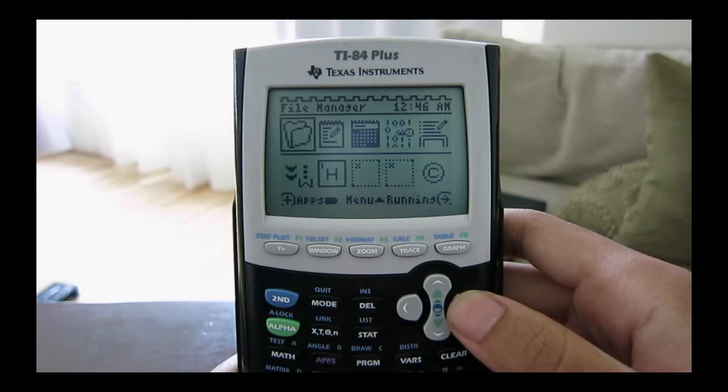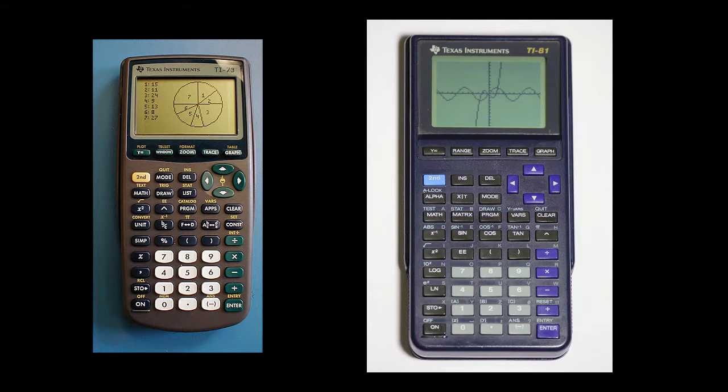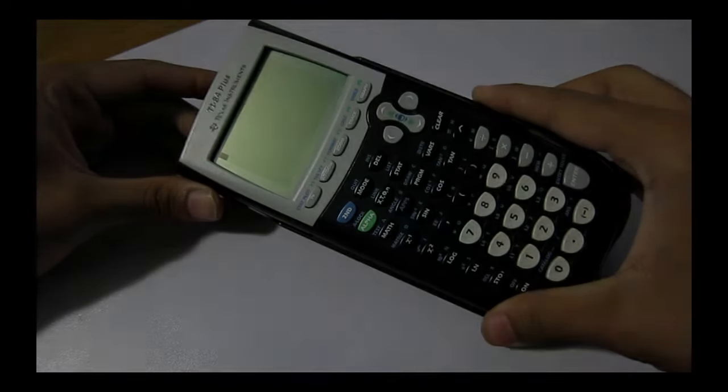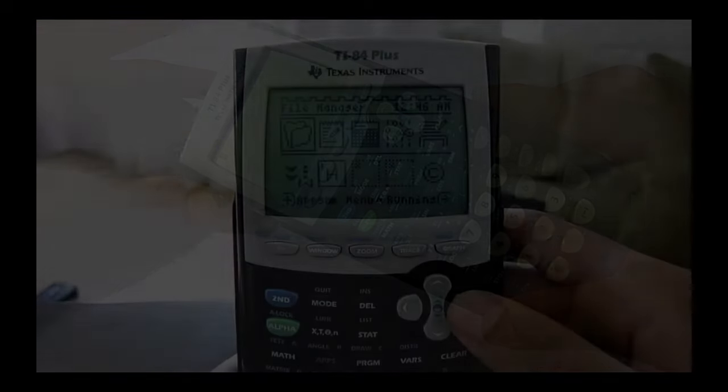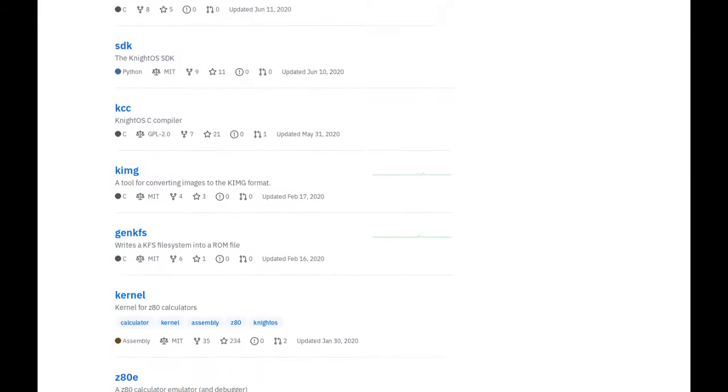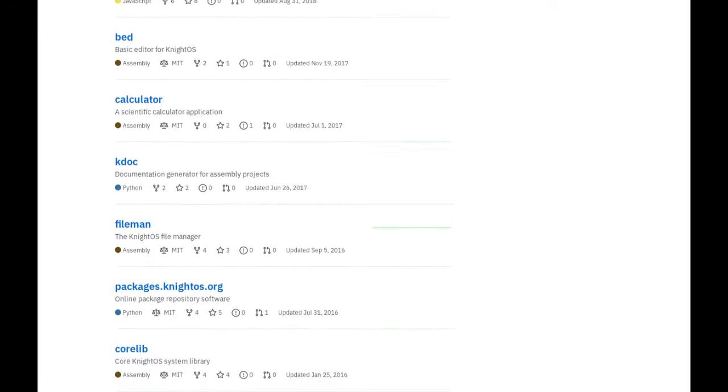NiteOS is a Unix-like operating system that runs on the Z80-based Texas Instrument calculators. These include the TI-73 and the TI-80 series, starting from the TI-81 all the way up to the TI-86. My calculator, the TI-84, was released in 2004. NiteOS is a full-fledged operating system. It's complete with its own kernel, it has a complete file system, has multi-tasking, and dynamic memory management. Best of all is that NiteOS is free and open source software and the entire source code is available on GitHub.